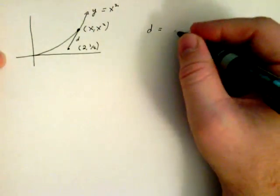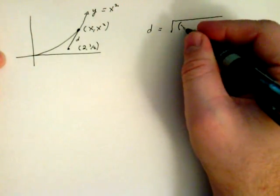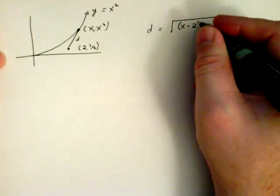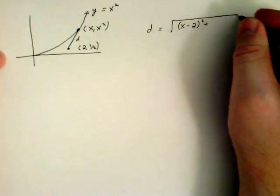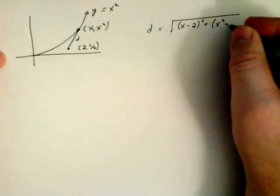Alright, let's find the distance between two points. So first, I'm going to take the square root of x minus 2 quantity squared plus x squared minus 1 half quantity squared.